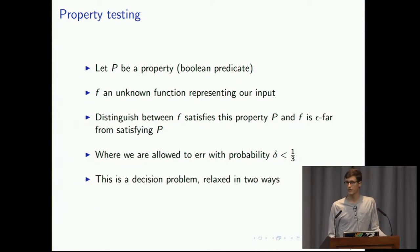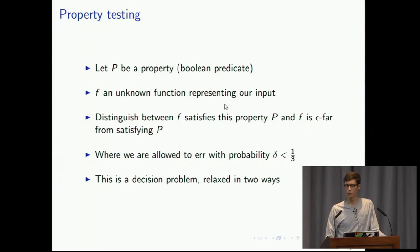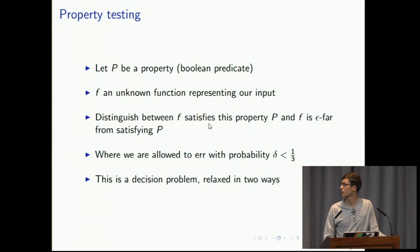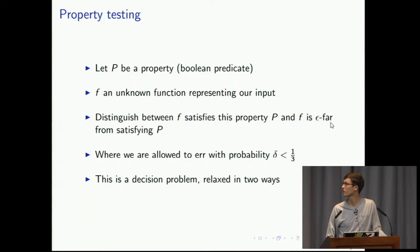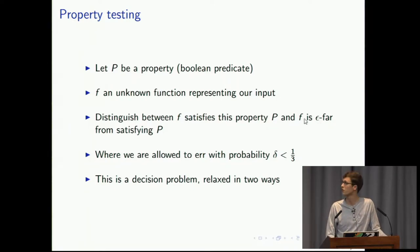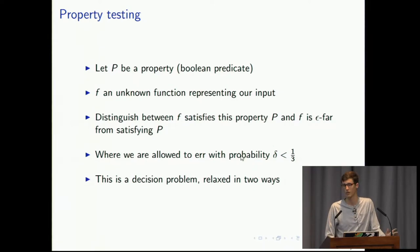This is essentially a decision problem that has been relaxed in two ways. A normal decision problem would only consider the cases F satisfying the property and F not satisfying the property. Here, we only need to be some distance away from the property, and secondly, we're allowed to make mistakes.